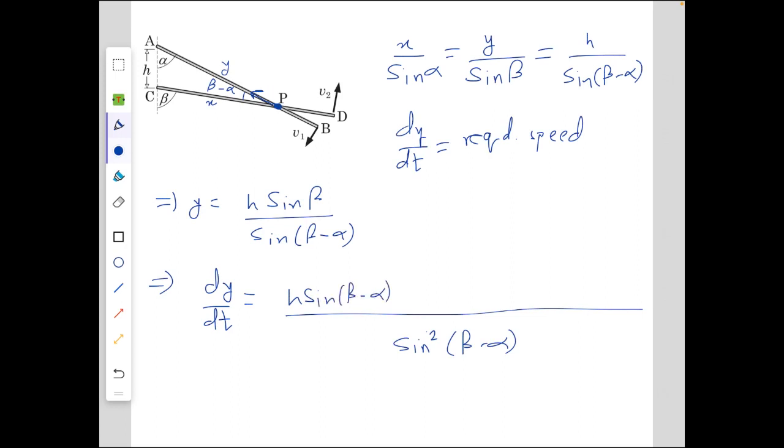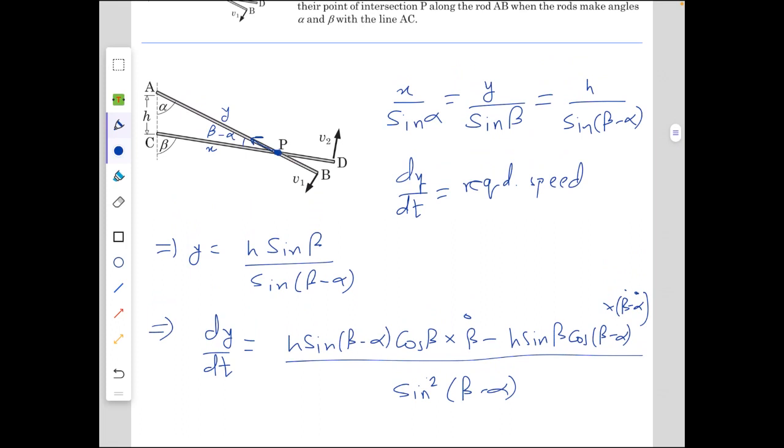And the numerator becomes h sine (beta minus alpha) multiplied by cos beta times beta dot, minus h sine beta cos (beta minus alpha) multiplied by (beta dot minus alpha dot).